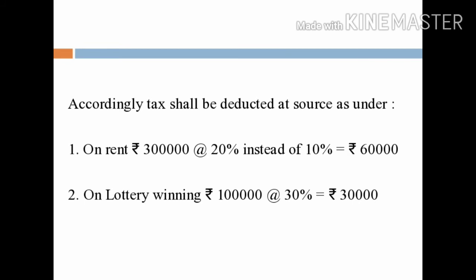Since the payee has not furnished PAN, we compare 10% and 20% — 20% is higher. So on rent of rupees 3,00,000, TDS is deductible at 20% instead of 10%. Rupees 3,00,000 at 20% equals rupees 60,000. Therefore, TDS deductible on rent is rupees 60,000.